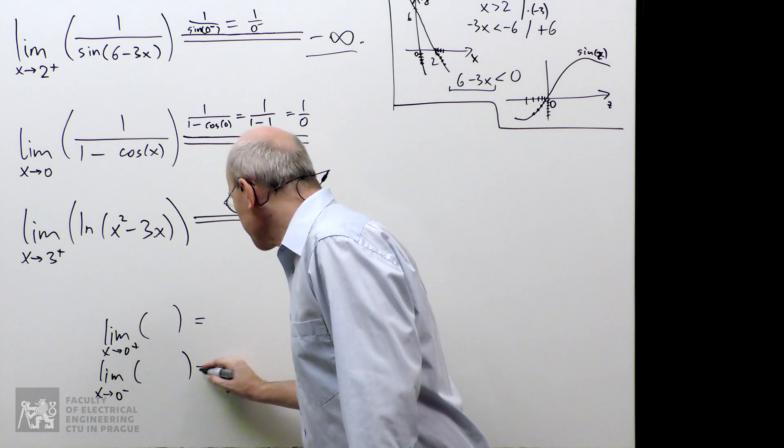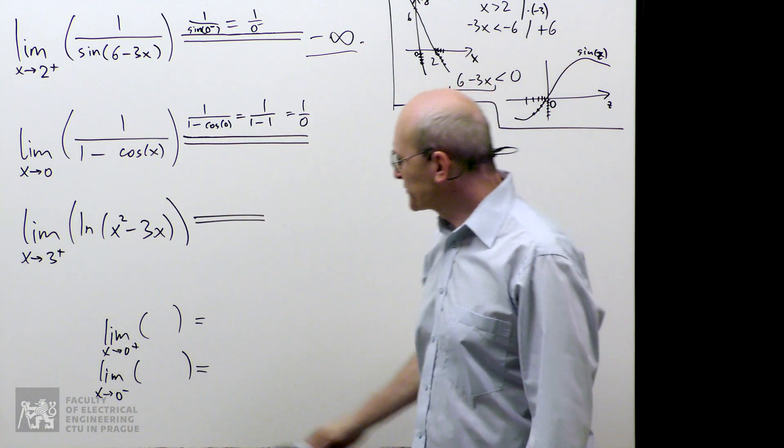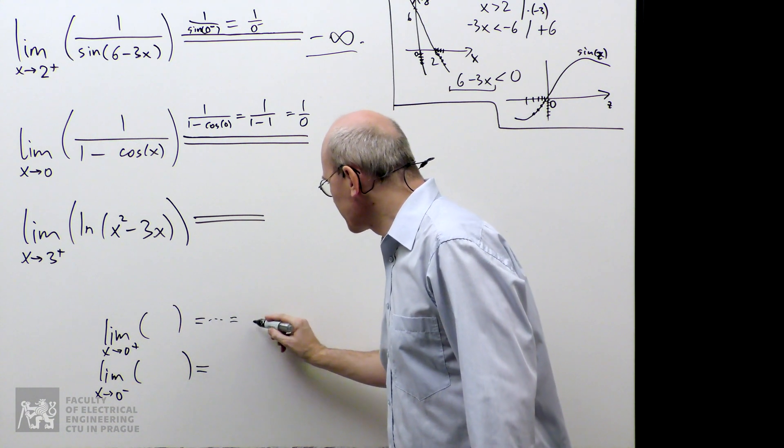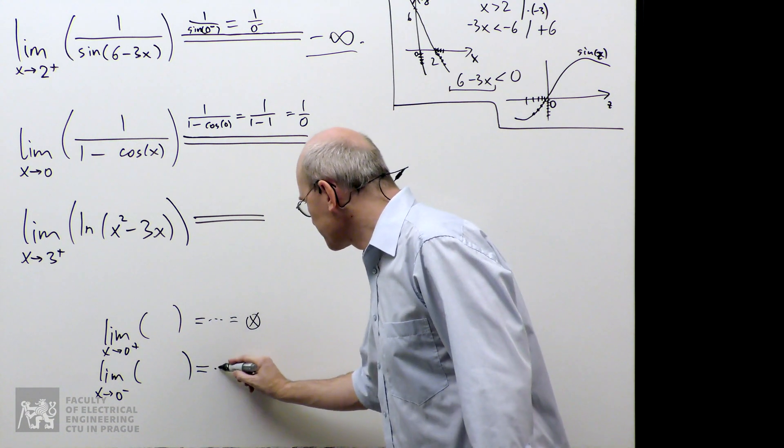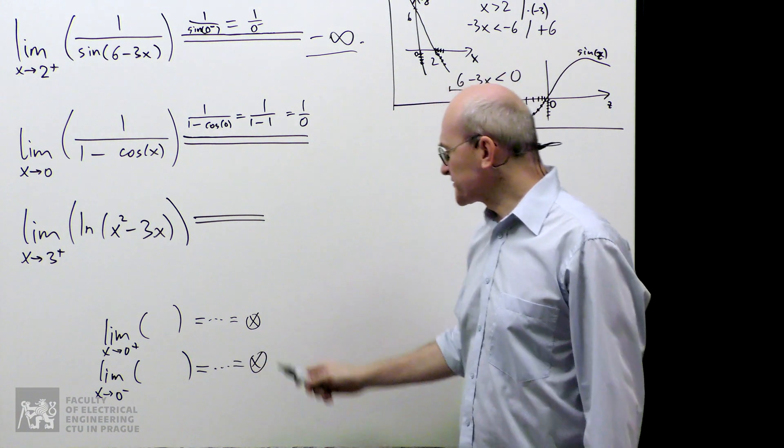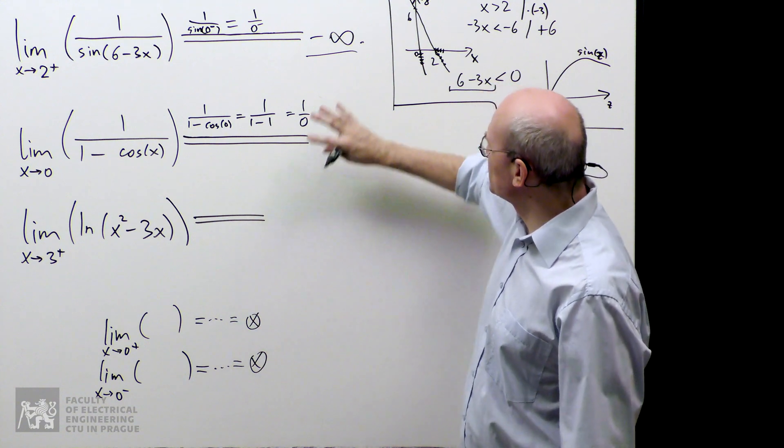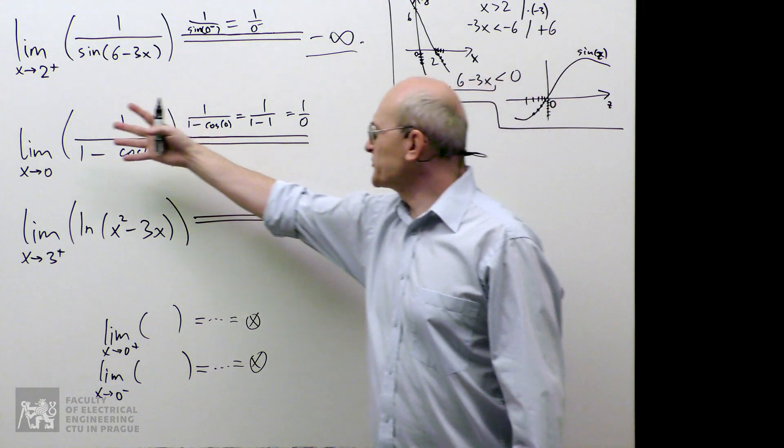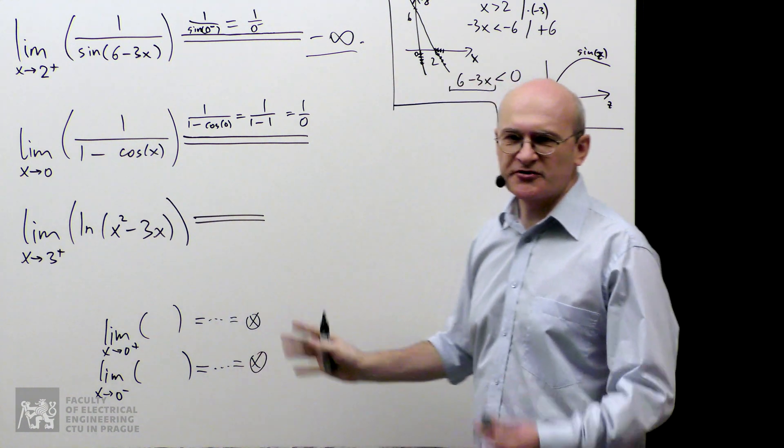And then I would evaluate it in the usual way. I would take this information and pass it through, and with a little bit of luck, I would get some answers. Now, if these answers are the same, then that's actually the answer to the original question. And if they are different, then the original limit does not exist. That's a general procedure.